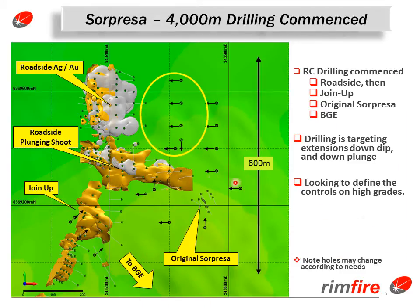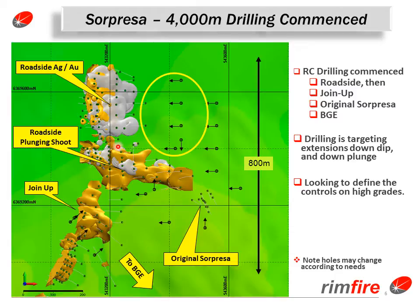Here is a plan view of the co-joined silver and gold mineralisation model. The dots with the arrows represent drill locations — these are pro forma and the actual structure of the program may change. You can see again we have a plunging chute down this way, and we are looking at the down dip positions. Again looking to define the controls on the high grades. At the join up zone we are seeing what the connection could be to the high grade surface position as it trends down to boundary gate east.